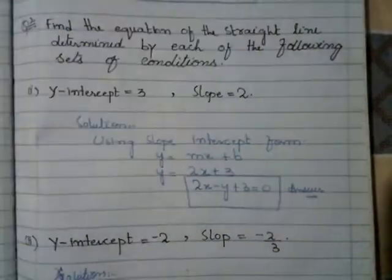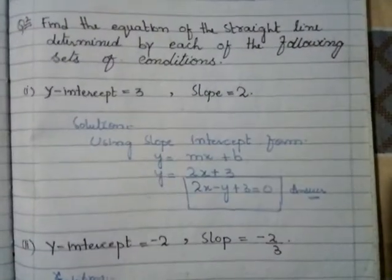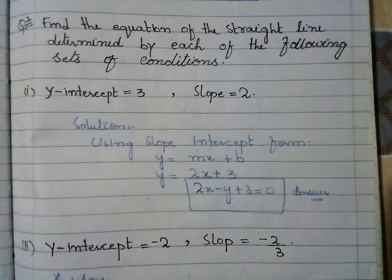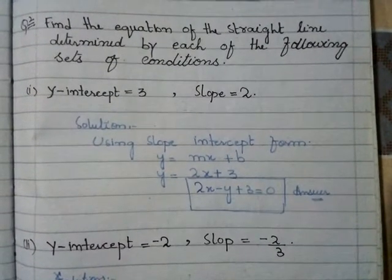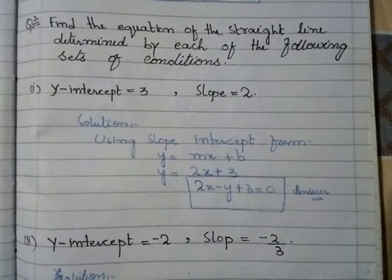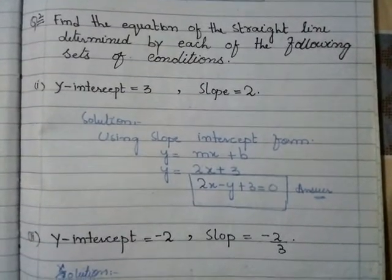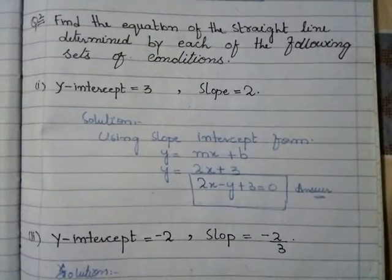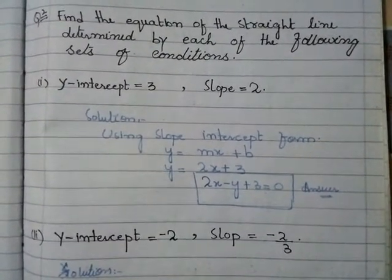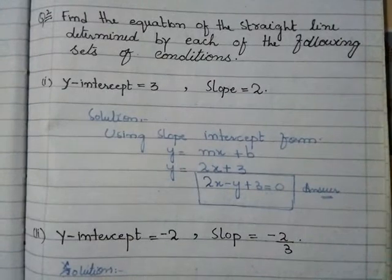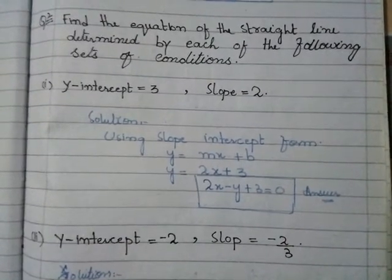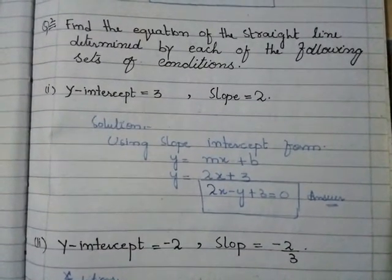Hi friends, welcome to online education. Today we study Exercise 2.5, Question number 2 — how to solve question number 2. Let's start now. Find the equation of the straight line determined by each of the following sets of conditions.